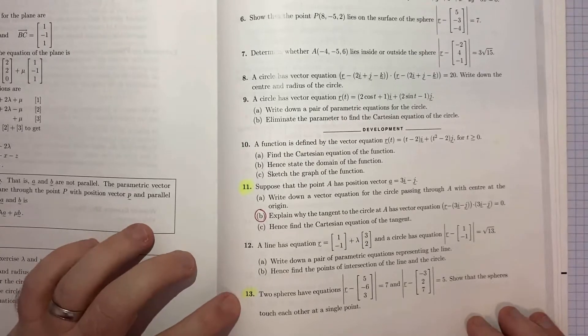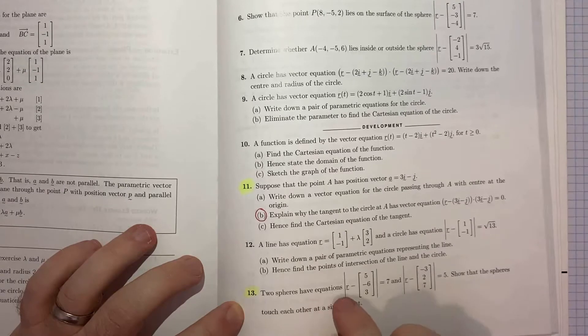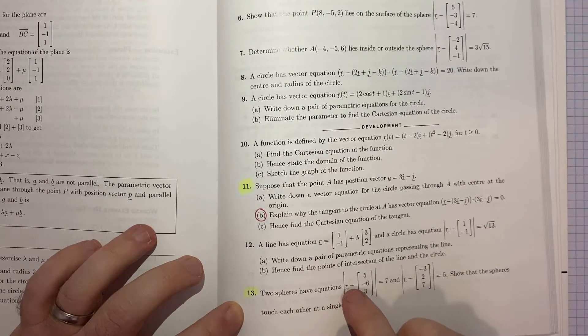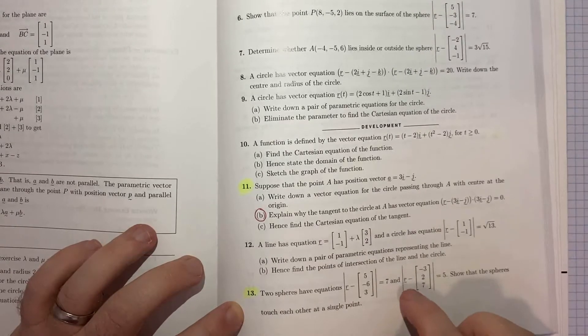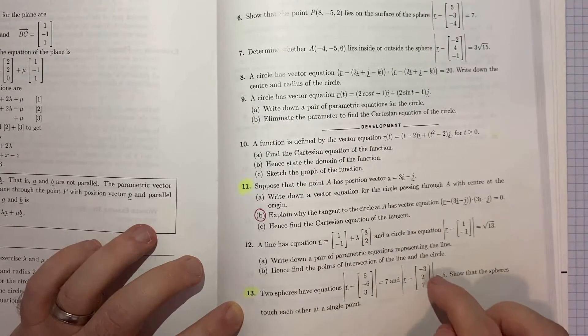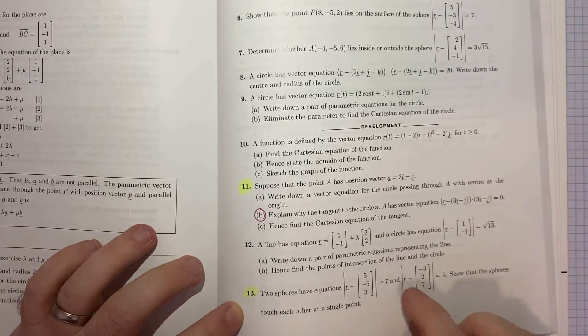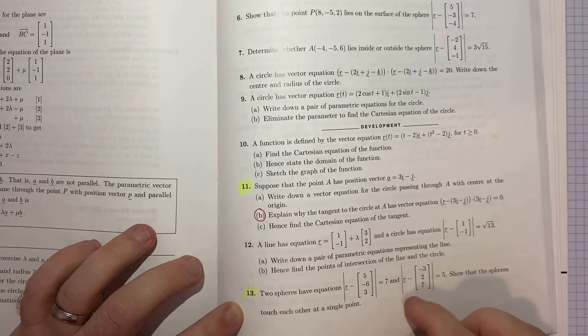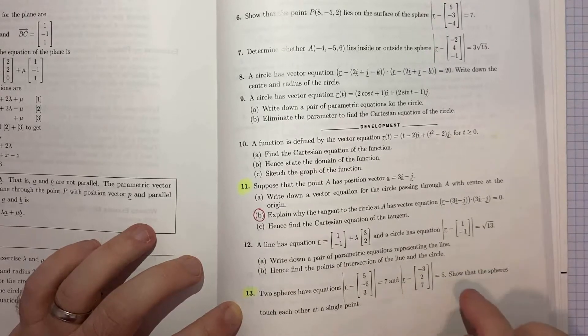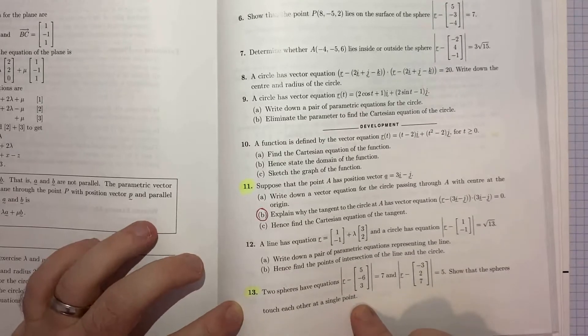In question 13, two spheres have equations: magnitude of r vector minus the vector (5, -6, 3) equals 7, and magnitude of r vector minus the vector (-3, 2, 7) equals 5. These are the classic definitions of the vector equation of a sphere. We're asked to show that the spheres touch each other at a single point.